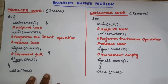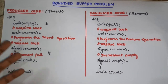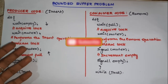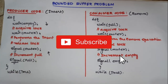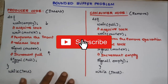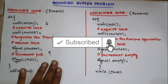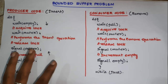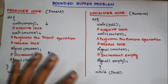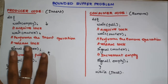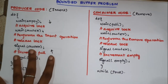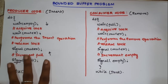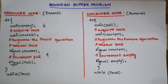This is the bounded buffer problem, or producer-consumer problem. We solve this problem using semaphores, and the producer and consumer processes are synchronized. I hope you are clear. We will see the next video — please subscribe to our channel. Thank you.